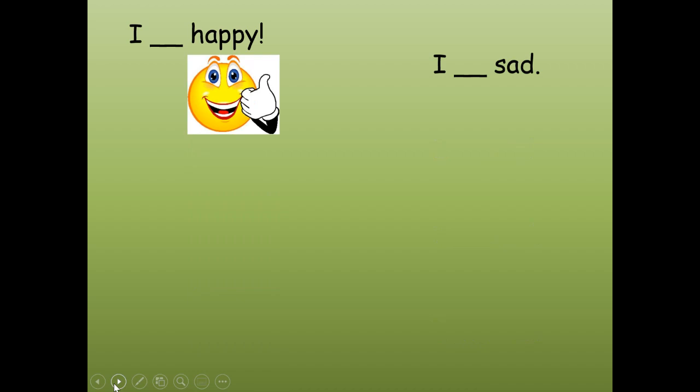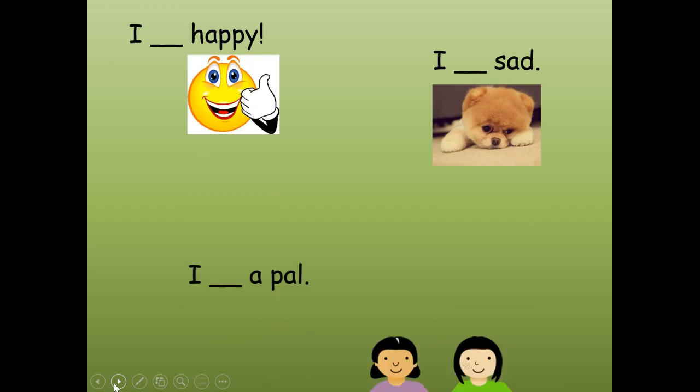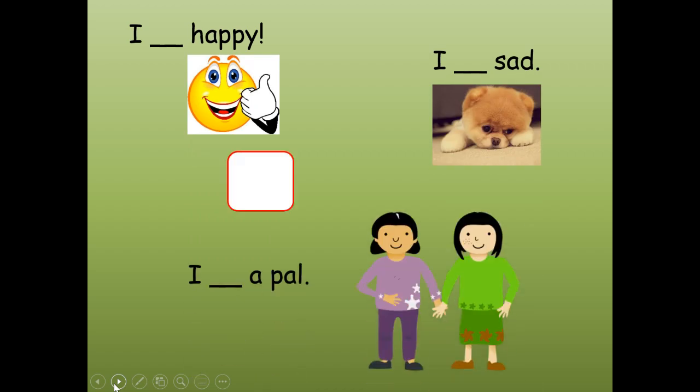Here's our first word. Number one, what do you think it is? It says, I blank happy. I blank a pal. I blank sad. What makes sense in those sentences? Am. Say it, am. Stretch it out, am. Shrink it, am. A, M. What word? Am. If I go too fast, push pause and write your word on number one.